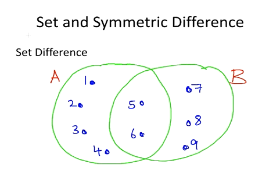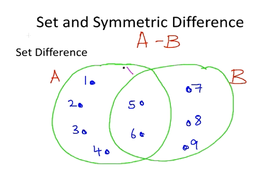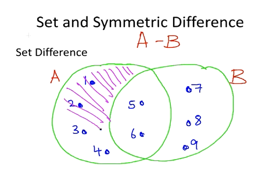Now the set difference of A minus B can be demonstrated as this portion of the Venn diagram here, which we'll color in magenta. These are the elements that are in A only.